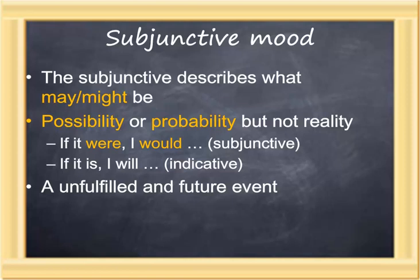We have a subjunctive form in English: "If I were, I would" is a subjunctive construction, as opposed to an indicative construction which deals with reality — "If it is, I will." So the subjunctive is about an unfulfilled, and to a degree, future event, but something that's only possible or probable, not necessarily reality.